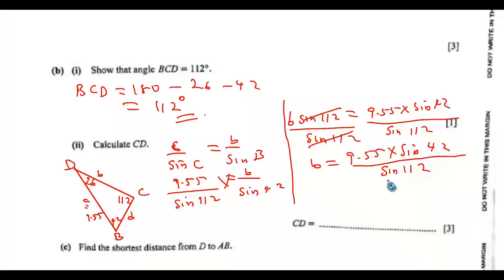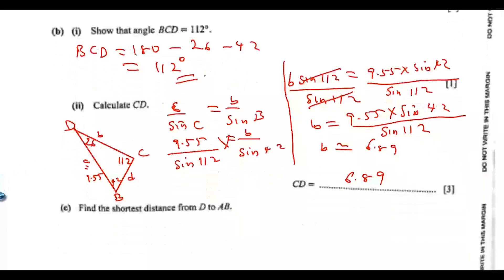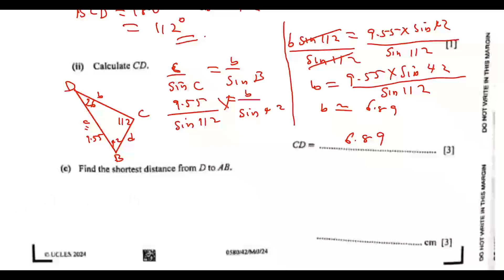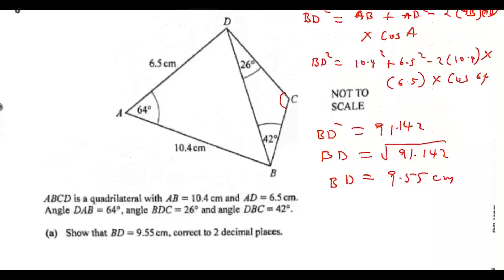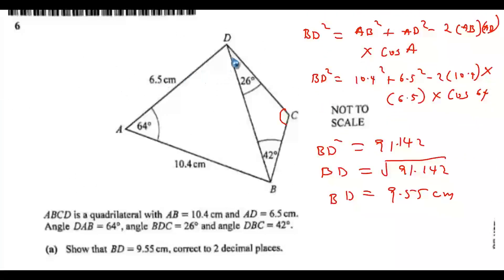Inputting into the calculator gives CD approximately equals 6.89 centimeters. Part D: find the shortest distance from D to AB. Looking at the diagram, the shortest distance from D to AB is a perpendicular from D to line AB.